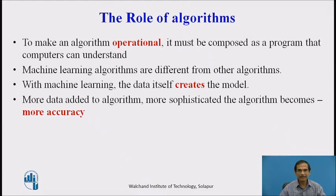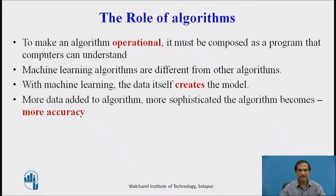With machine learning, the data itself creates the model because we are learning from the data. The more data that is added to the algorithm, the more sophisticated it becomes — because more randomization, more unlabeled data, more unstructured data, and all these attributes contribute to developing greater accuracy of the results.